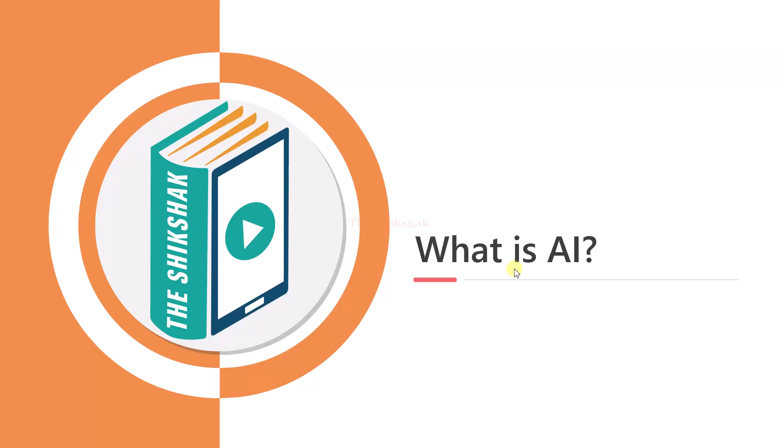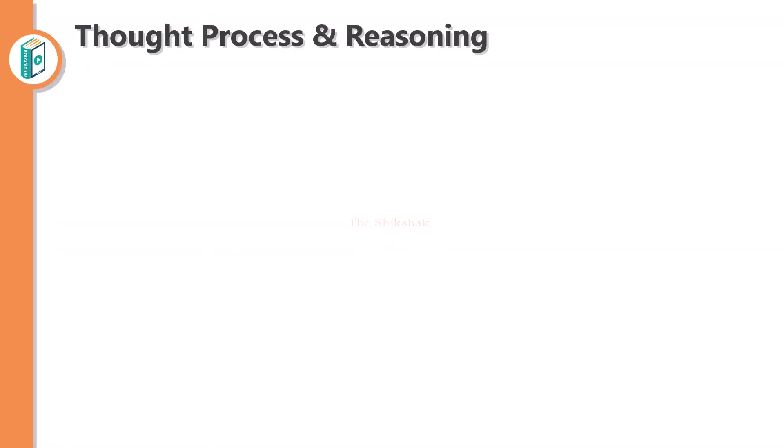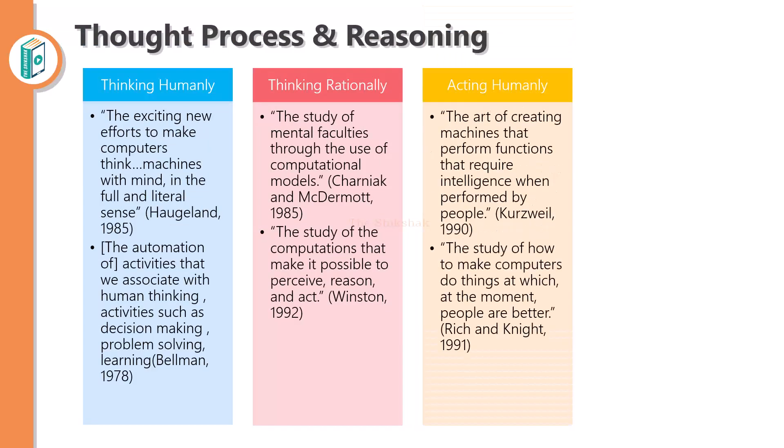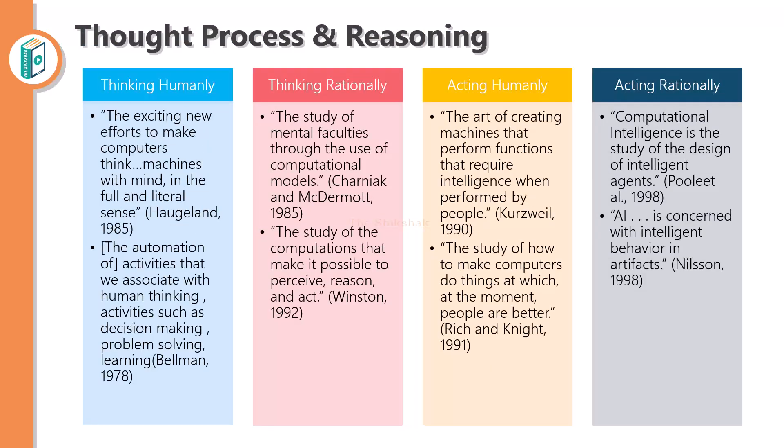Hello friends, welcome to the Shikshak platform. Today we are going to discuss a very important topic: what is AI, what is meant by artificial intelligence. Artificial intelligence definitions are concerned with two approaches: the thought process and the reasoning. Here we have four different types of definitions that scientists have built in different eras.